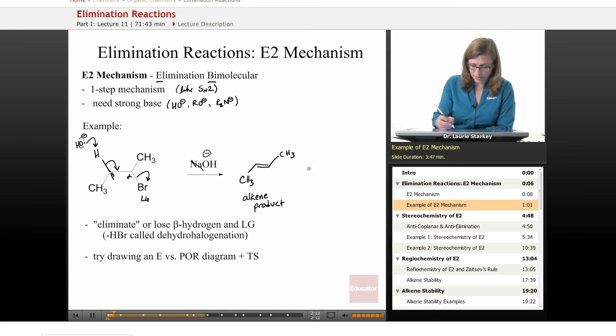The other products being formed, if I use hydroxide, I'm also forming water, the conjugate acid of hydroxide, and of course, I always lose my leaving group, so I also form bromide as well. This is described as an elimination reaction because you have eliminated both the beta hydrogen and the leaving group. We lost HBr, so sometimes this reaction is described as a dehydrohalogenation because you've lost the hydrogen and the halogen.